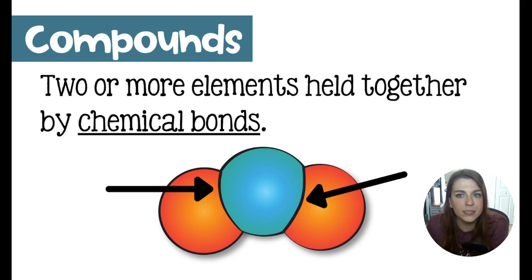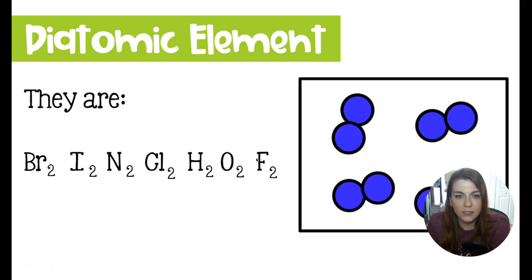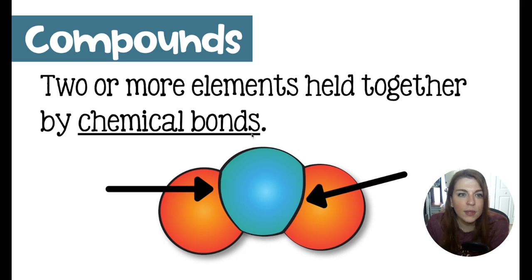Any time two different elements come together and form a bond, they are going to form what's called a compound. I specify different because we just spoke about those diatomic elements. F bonded to F is not a compound. That is a diatomic element. It does make a fluorine molecule, though.